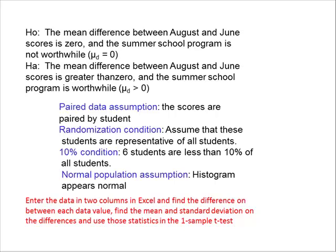So the question, the null hypothesis will be that the mean difference between August and June scores is zero and the summer school program is not worthwhile. The alternative hypothesis is that the mean difference between the August and the June scores is greater than zero and the summer school program was worthwhile. We have the paired data assumption, we see that the scores are paired by student, we have a randomization condition, we have to assume that these students are representative of all students, which is tricky because we have such a small sample.